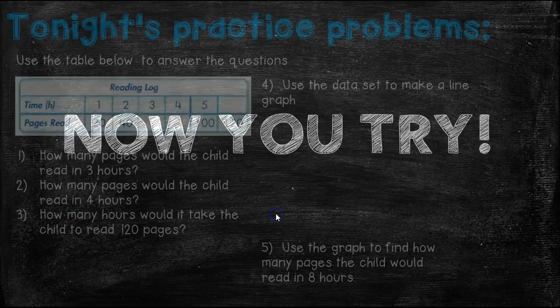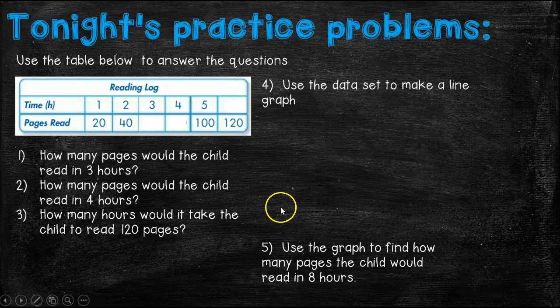Okay, now it's your turn to try. Here are tonight's practice problems. You're going to use this table here to answer the five questions. You're going to start off by figuring out what the rule is and filling in how many pages would this child read in three hours? How many pages would the child read in four hours? And then how many hours does it take the child to read 120 pages? So you're going to fill out the rest of the table now by what you notice about this rule.